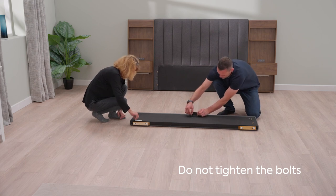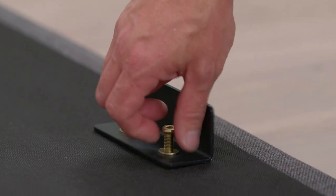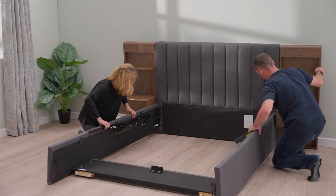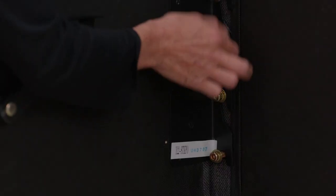On the footboard, attach the central support bracket. Hook the side rail onto the bolts at the headboard on both sides and tighten to 90%.